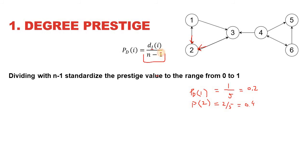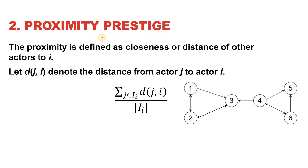The denominator serves as normalization, bringing all values into the range of zero and one. The next type is proximity-based prestige. Proximity reflects closeness — if a node is close to most other nodes, it receives a high value. The proximity prestige of node i is calculated as the sum of shortest paths from all reachable nodes to i, divided by the total number of nodes that can reach i.